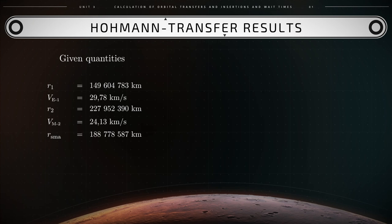From these data, we calculate the semi-major axis rA, which equals 188,778,587 km. From the previous expressions too, we find the following results.